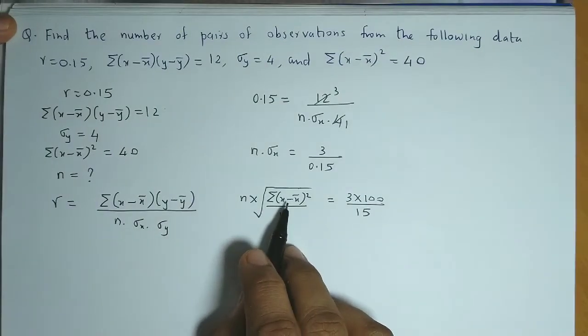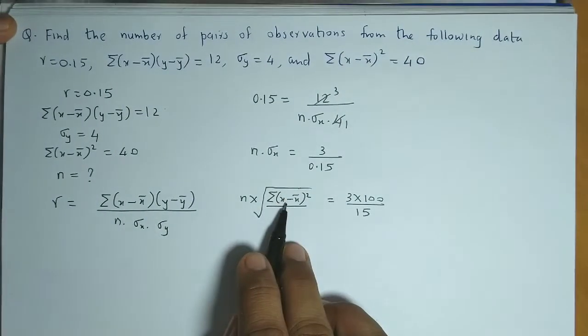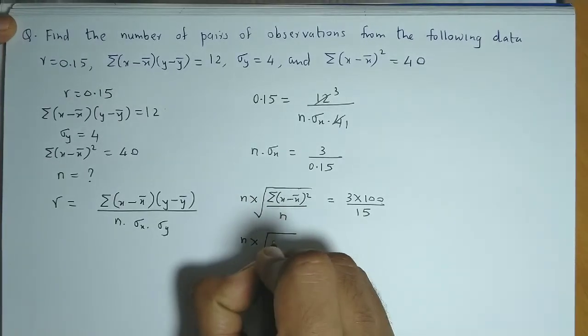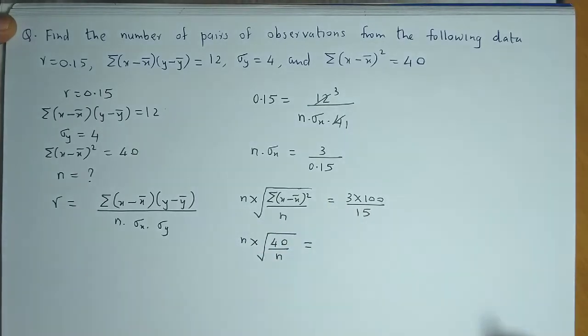Now we have this total value which is 40, so we substitute it over here. So we have n times square root of 40 by n equals 2.